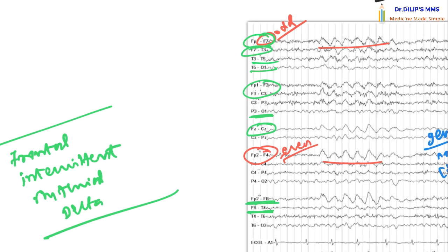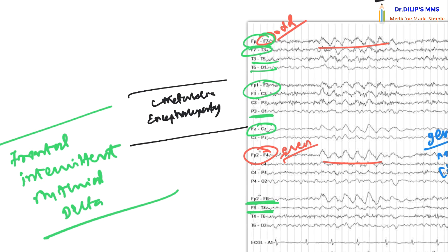Where do you see FIRDA? Similar to triphasic waves, FIRDA can be seen in any condition causing metabolic encephalopathy. But for exam purposes, think about raised intracranial pressure due to any cause — that is the key association with FIRDA. I've now discussed three EEG patterns and their nomenclature. Hopefully you found this helpful, and I'll see you in the next Dr. Blitz MMS Weekly. Thank you very much.